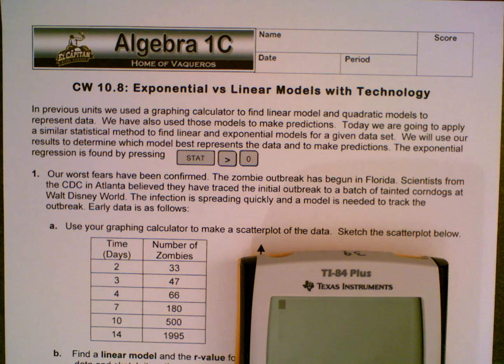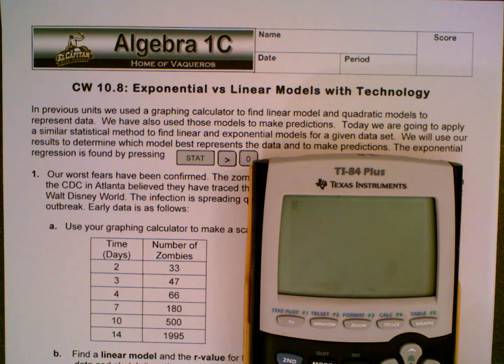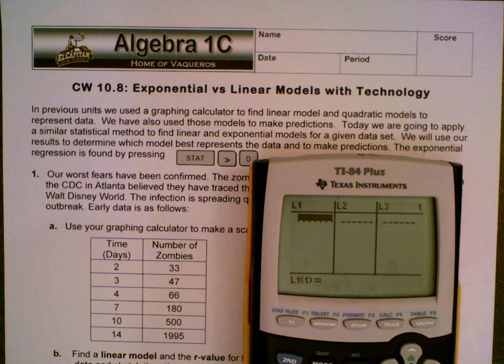Alright, so the first thing we've got to do is make that scatterplot. So in order to do this, we are going to have to input the data. So to do this, you're going to hit STAT, enter. And the list should show up on your screen. Once again, if this doesn't work, go ahead and rewind the video, refollow the directions, and if that still doesn't work, go ahead and raise your hand and ask the question.